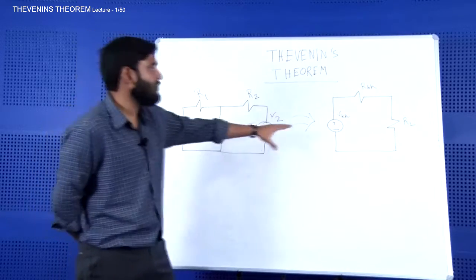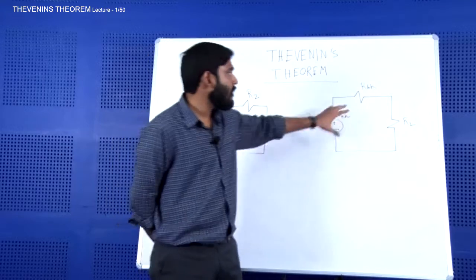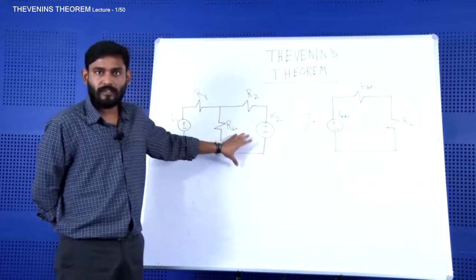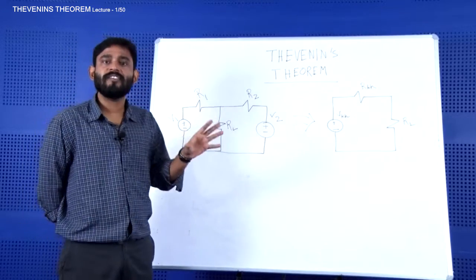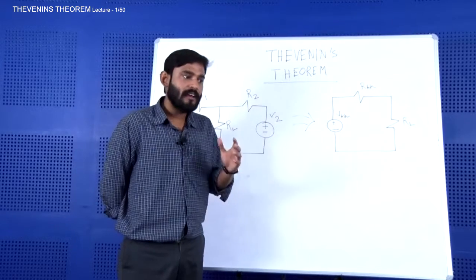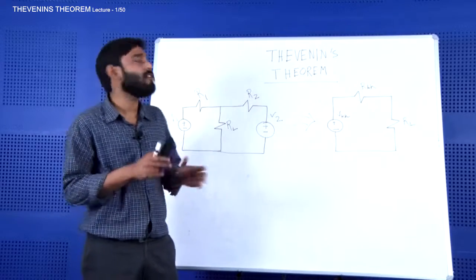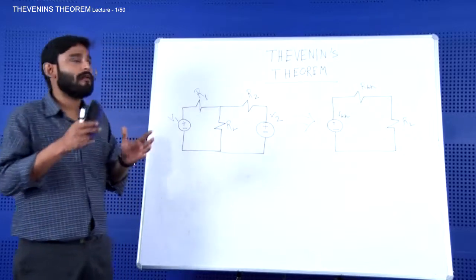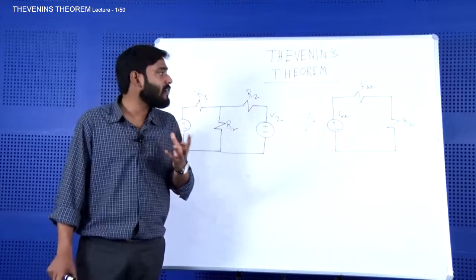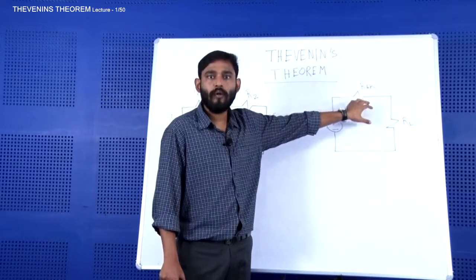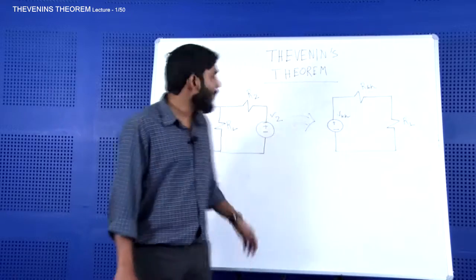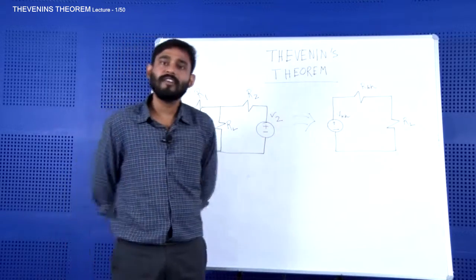In the Thevenin equivalent, RL is completely isolated from the other parts of the circuit. The circuit's energy is represented by the voltage source VTH, and the total internal resistance — how the resistances are aligned and how they behave — is condensed into a single resistance RTH. By varying RTH you can vary the other parameters of the circuit.